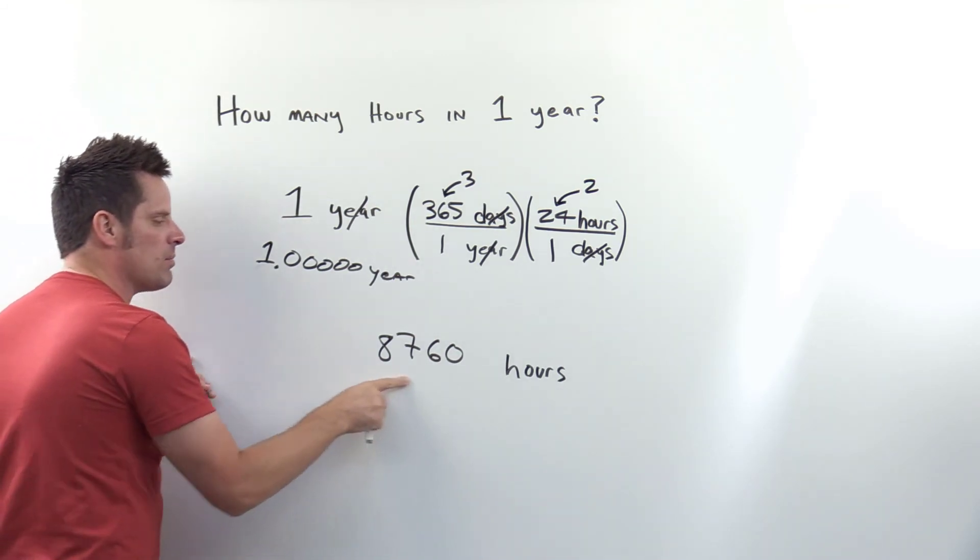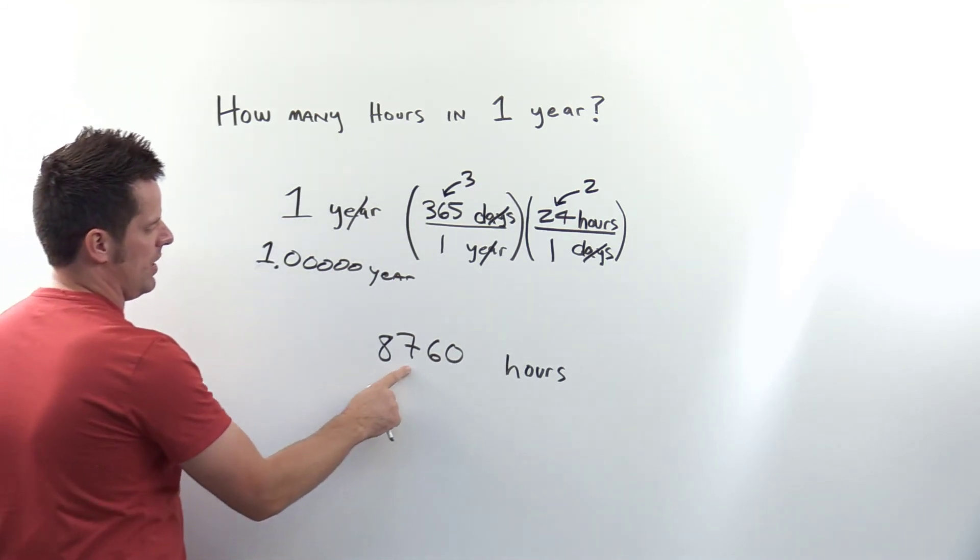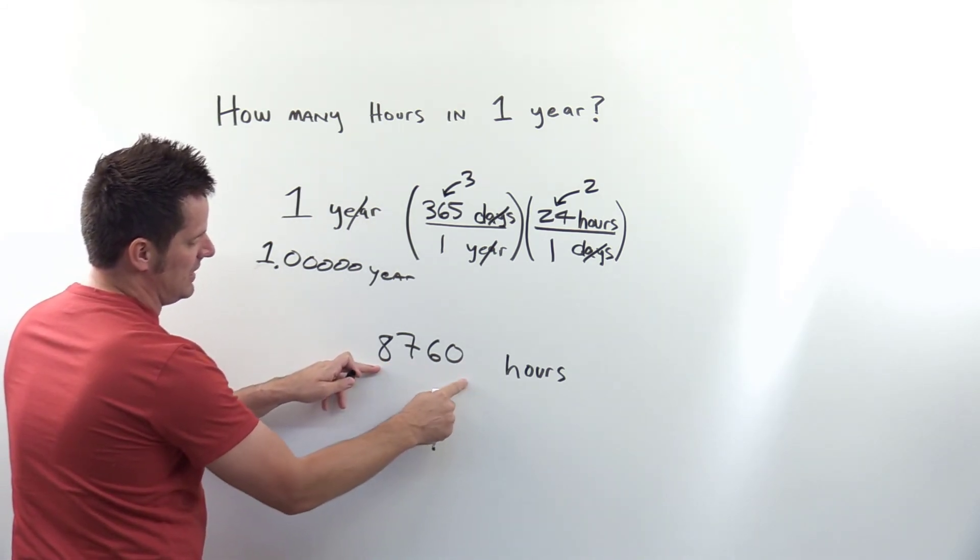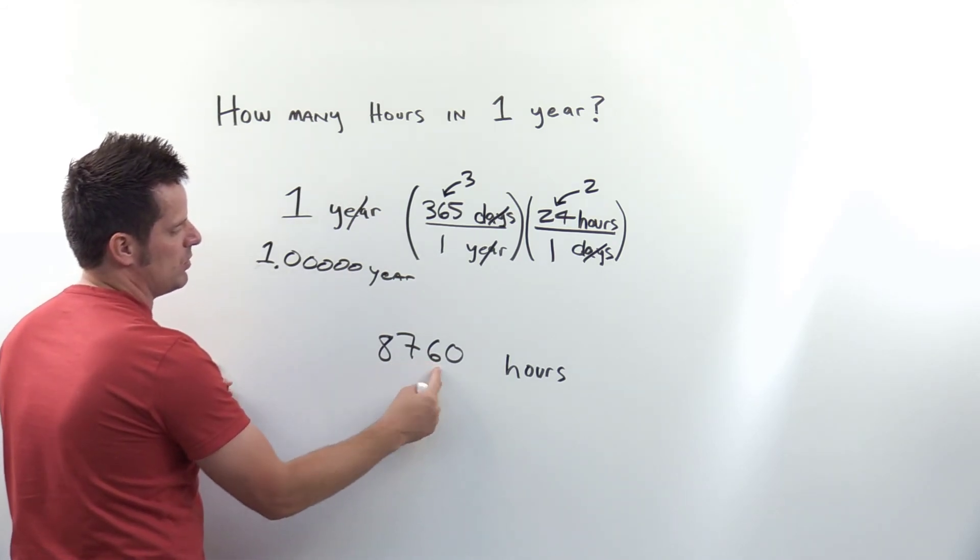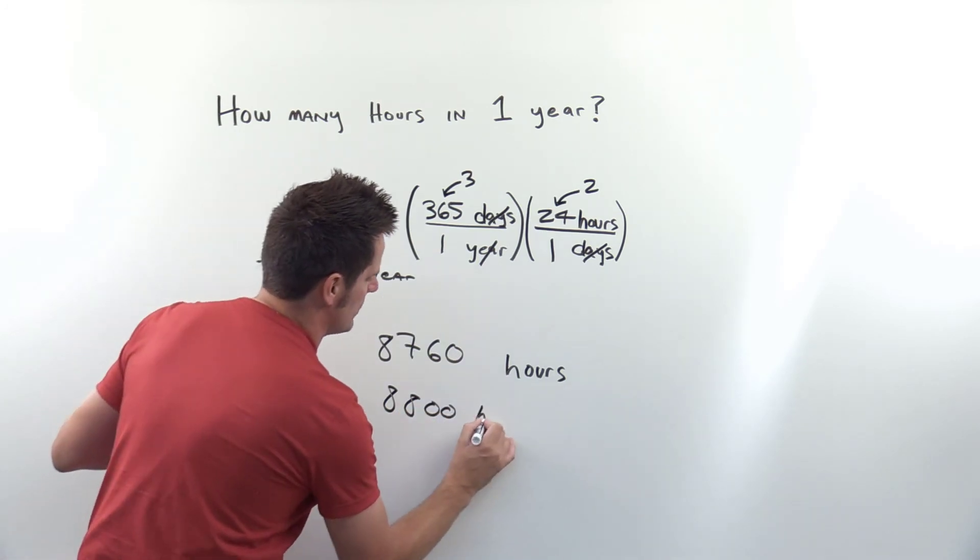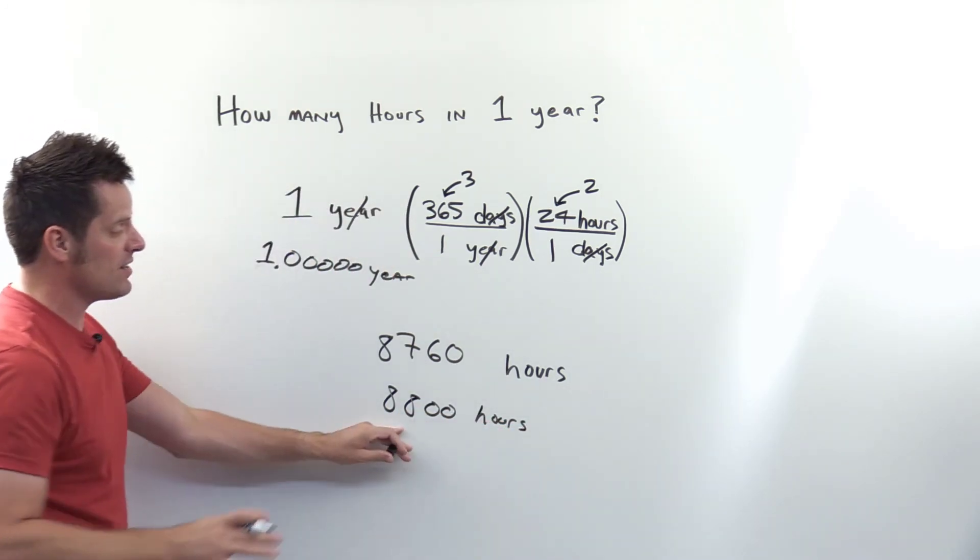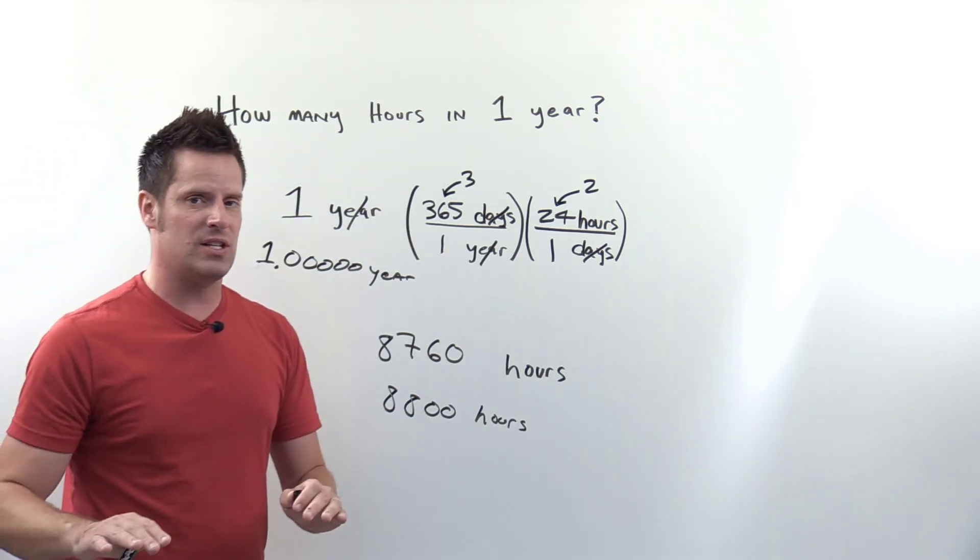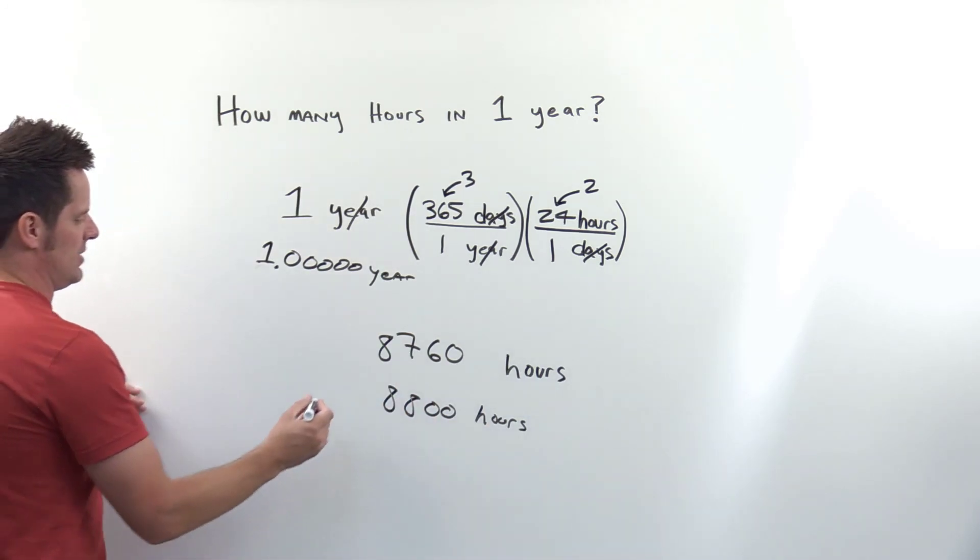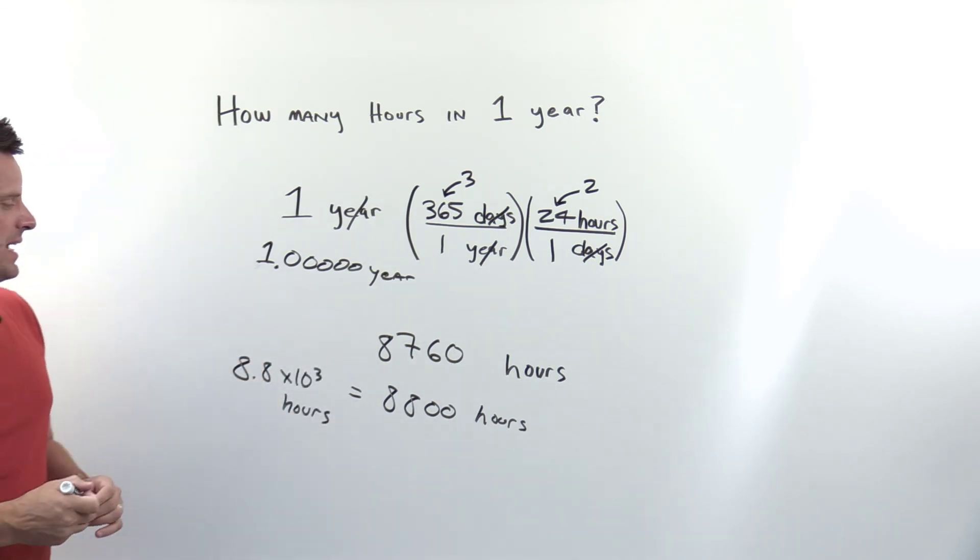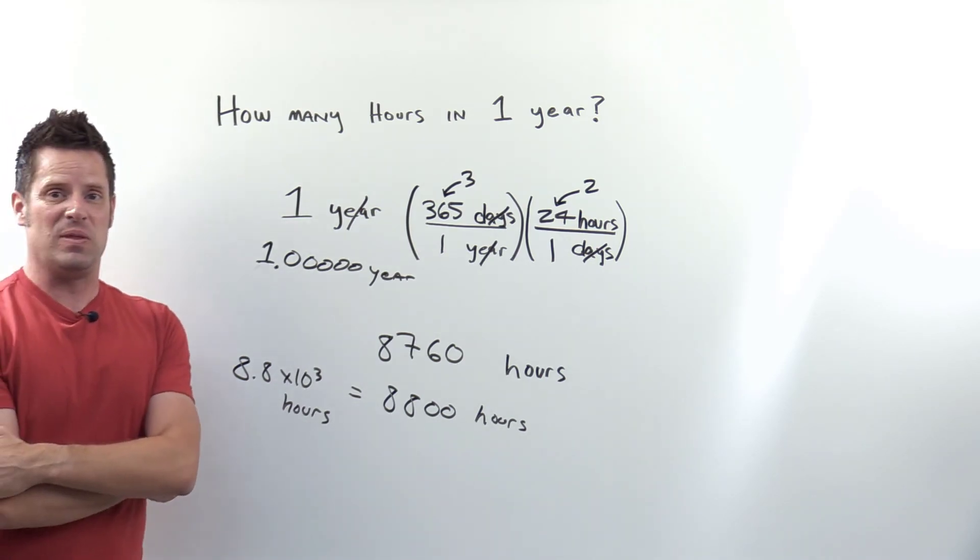I'll round my final answer to have exactly two significant figures. 8760—I'll keep the two leftmost digits, and this one rounds up because it's larger than five, so it's 8800 hours. That has two sigfigs because zeros to the right of nonzero integers don't count as significant unless they're right of a decimal. You can rewrite that as 8.8 × 10³ hours. Either way, it has two significant figures, and that's the correct answer.